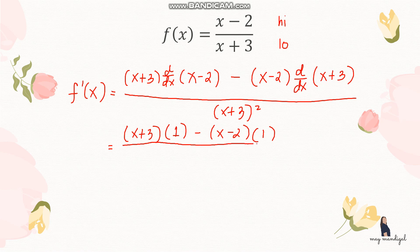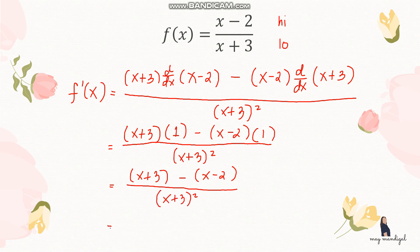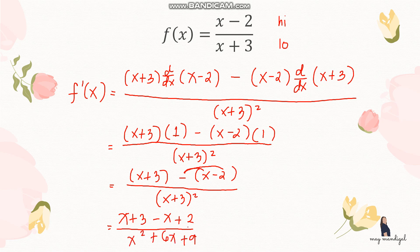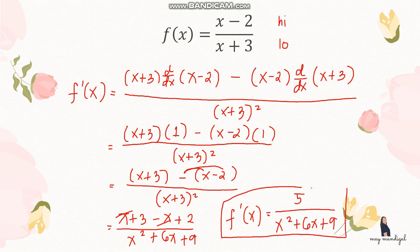This gives us (x plus 3) minus (x minus 2), all over (x plus 3) squared. Distributing the negative sign in the numerator gives x plus 3 minus x plus 2, over x squared plus 6x plus 9. The x terms cancel, leaving 5 in the numerator, so f prime of x equals 5 over (x squared plus 6x plus 9).